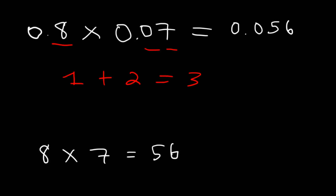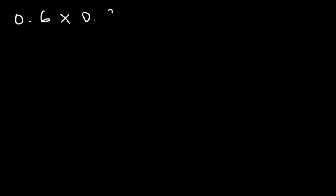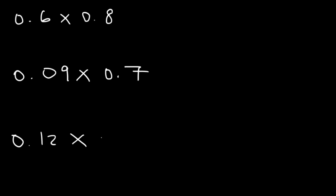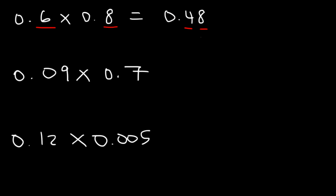Since 8 times 7 is 56, 0.8 times 0.07 is going to be 0.056. We have three digits to the right of the decimal point. So based on those two examples, go ahead and try these three: multiply 0.6 times 0.8, 0.09 times 0.7, and 0.12 times 0.005. Now, we know that 6 times 8 is 48, so 0.6 times 0.8 is 0.48. We have one digit in each number, 1 plus 1 is 2, so the final answer should contain two digits.